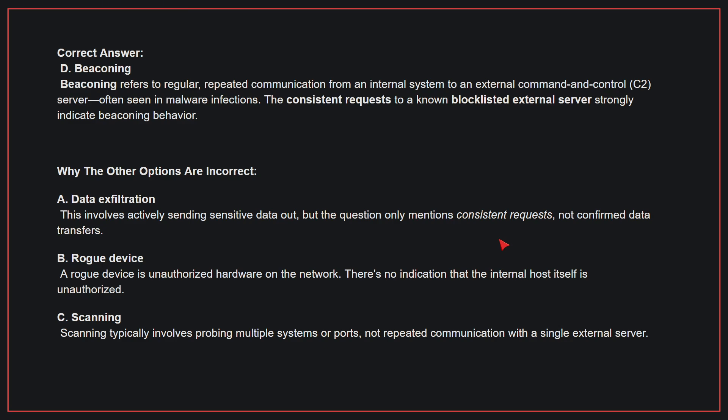Why the other options are incorrect? A: data exfiltration — this involves actively sending sensitive data out, but the question only mentions consistent requests, not confirmed data transfers. B: rogue device — a rogue device is unauthorized hardware on the network; there is no indication that the internal host itself is unauthorized. C: scanning — scanning typically involves probing multiple systems or ports, not repeated communication with a single external server. Therefore, the correct answer is D.